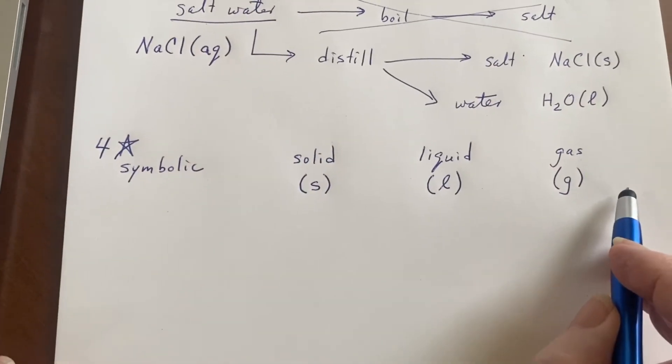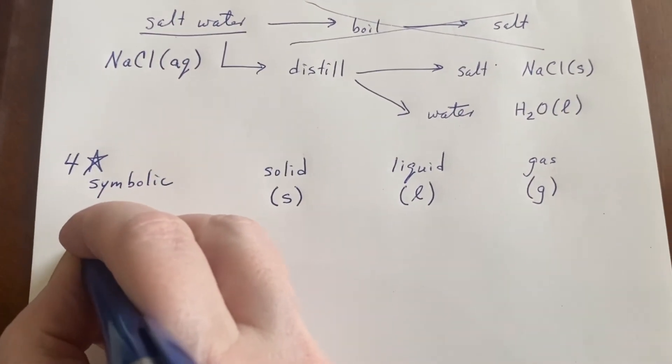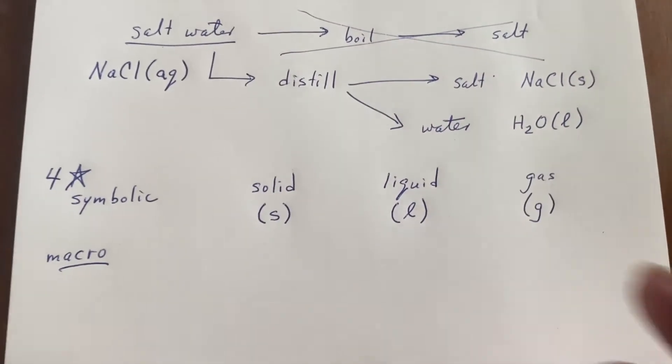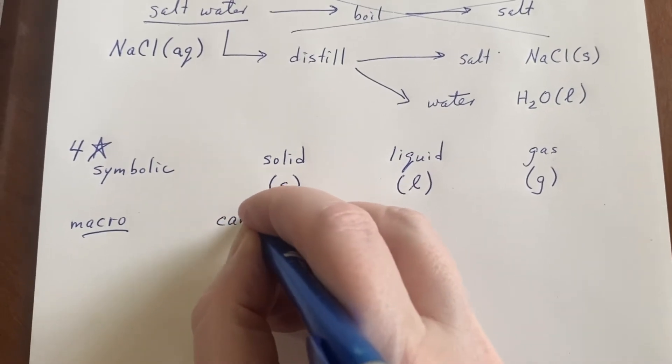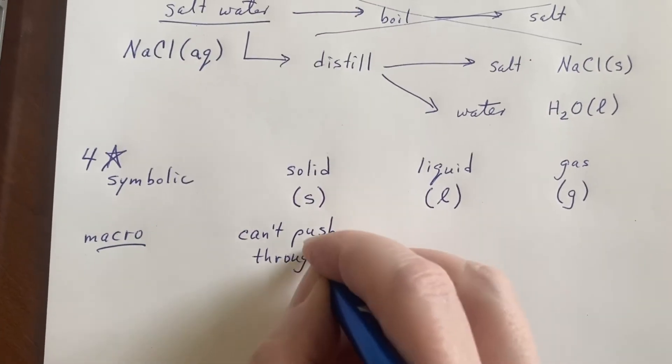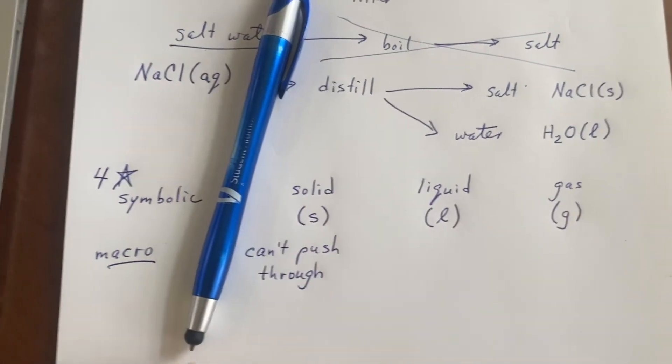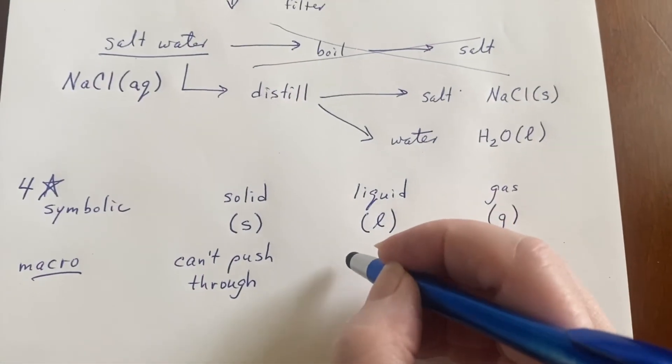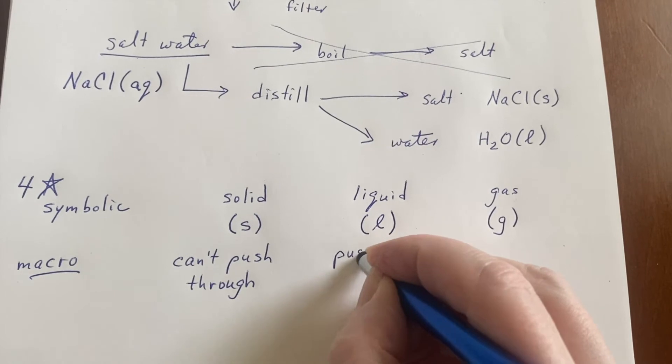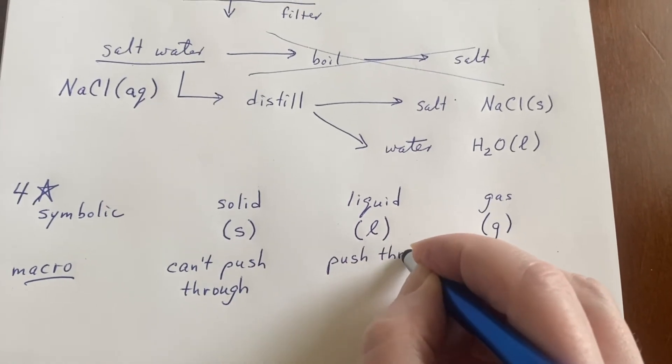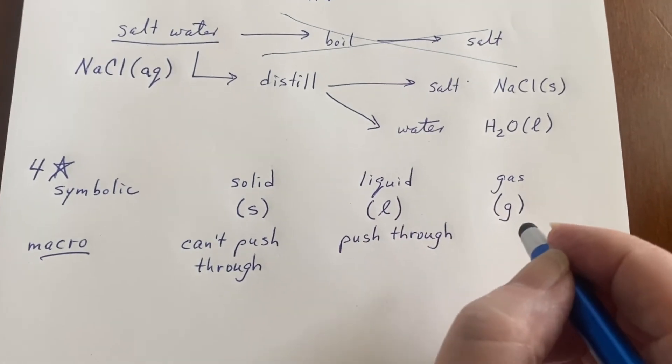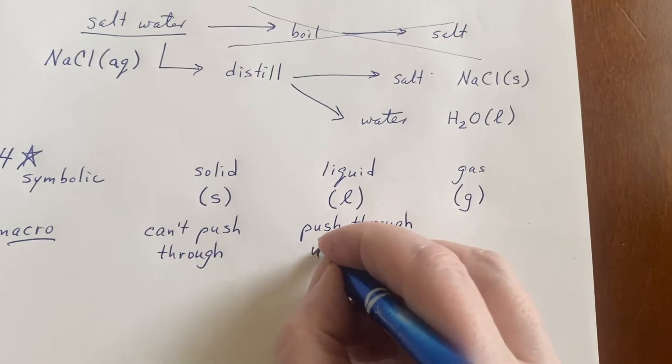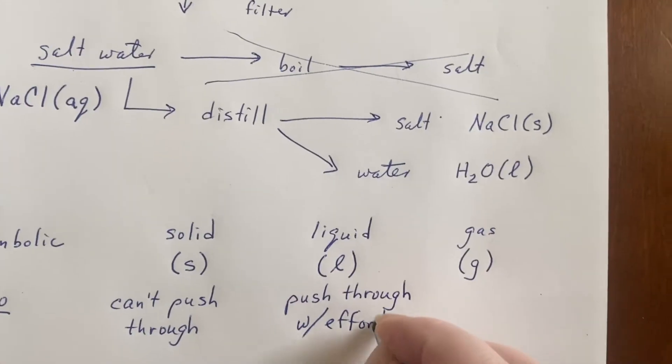This is the symbolic. What would I say about it in a macroscopic sense? If I have a solid I can't push through it. That's what I would observe. It's solid. If I try to push through it, it's just gonna move or I'm gonna move. If it's a liquid I can push through but I have to use some effort. If you go swimming and you try to push through hard, you really have to put a lot of effort into moving through water.